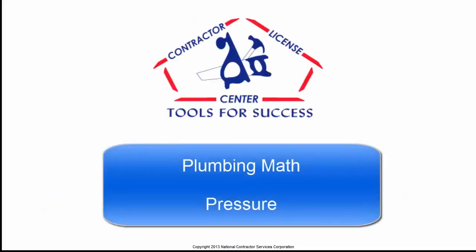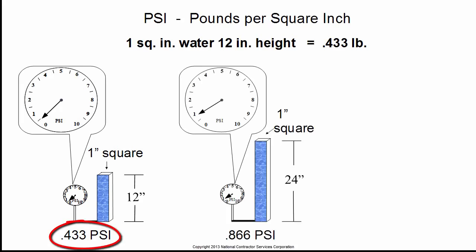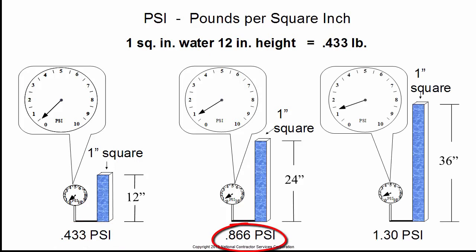This is another constant: the weight of water per square inch. A 1 inch squared tube of water, 1 foot in height, equals 0.433 psi. Add another foot of water onto the tube and it has a reading of 0.866 psi. Add another foot and the reading goes up another 0.433 to 1.3 psi.